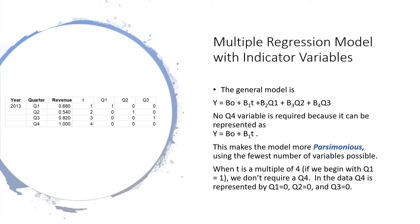So for 2013, the revenue was 0.68 at time period 1. It was quarter 1, not quarter 2, not quarter 3. Then look at quarter 4: the revenue was 1 at time period 4, and it's not Q1, Q2, or Q3, so those are all zeros. By leaving out Q4, this makes the model more parsimonious.